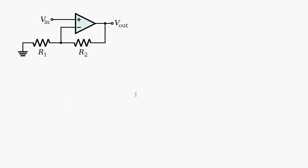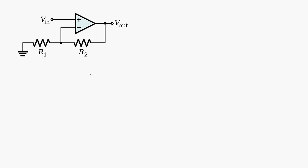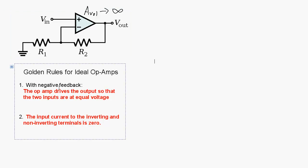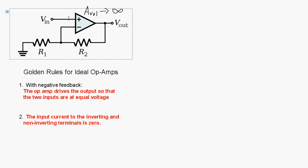Now we can actually shorten that analysis for a non-inverting amplifier like this. If we assume that the open-loop voltage gain is very big, approaching infinity, then we can apply the golden rules for ideal op-amps. The golden rules state that if we have negative feedback — feeding the signal from the output back into the inverting terminal — then the op-amp is going to force both the non-inverting terminal and the inverting terminal to have the same voltage.